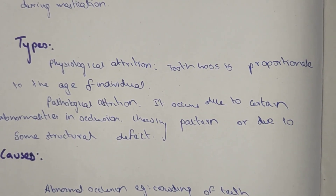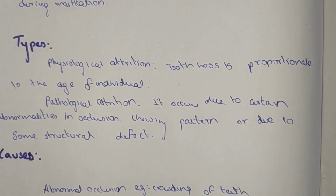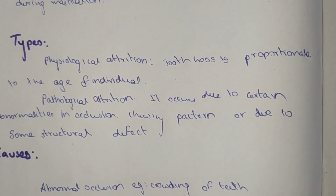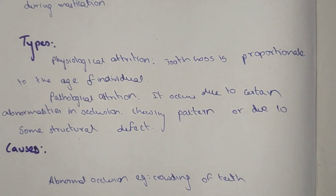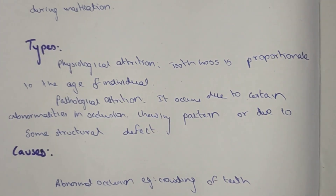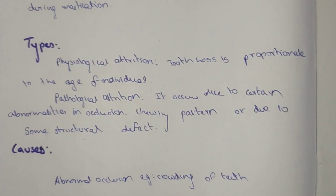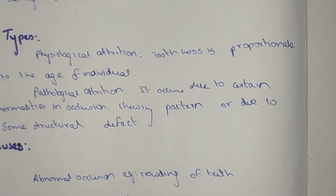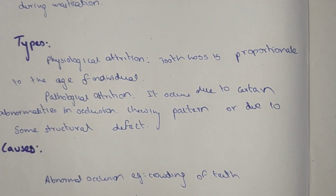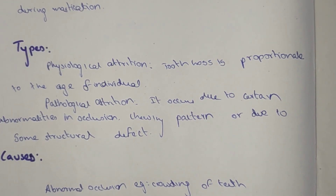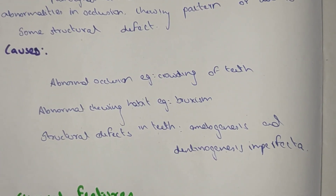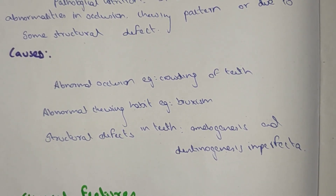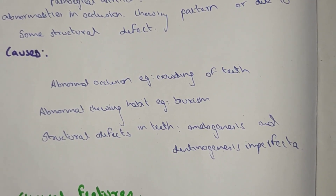There are two types of attrition: physiological and pathological. In physiological attrition, tooth loss is proportional to the age of the individual. In pathological attrition, it occurs due to abnormalities in occlusion, chewing pattern, structural defects, or crowding of teeth.